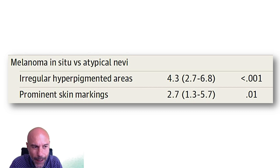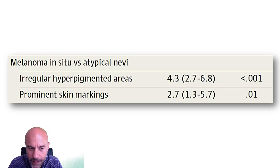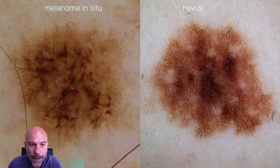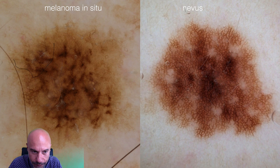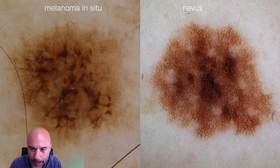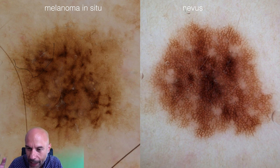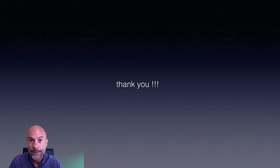In a study comparing melanoma in situ with atypical nevi, irregular hyperpigmented areas and prominent skin markings were the only significant predictors of melanoma. For instance, a melanoma in situ on the left with irregular hyperpigmented areas in contrast to an atypical nevus with some focal hyperpigmentation, which however corresponds to a darker pigment network rather than irregular structureless areas. That concludes the dermatoscopic morphologic universe of melanoma. Thank you very much for your attention.